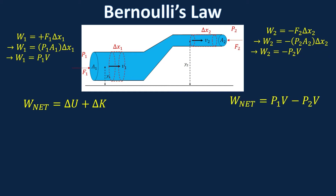Now let's look at the change in potential and kinetic energy. Whenever you're doing change in energy, you always do final minus initial. The change in potential energy is MgY2 minus MgY1. For kinetic energy, the change is one half mv2 squared minus one half mv1 squared.